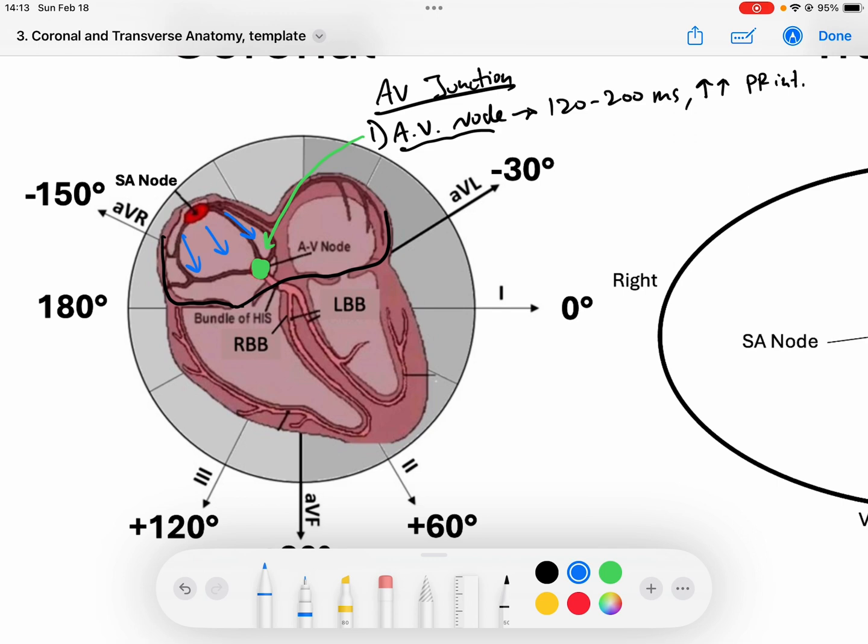But the next part of the AV junction is this tissue labeled the bundle of His. So the second part is our His bundle. These are conducting fibers that are exiting the AV node and then sending the signal down via the bundle branches and everything down our highway system.